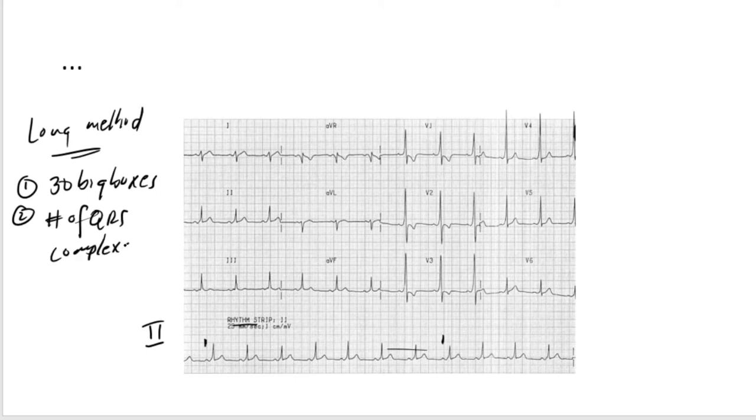Then the second thing that you want to do is count the number of QRS complexes in those 30 boxes. So between here and here, how many QRS complexes do we have? We have one, we have two, we have three, we have four, we have five, we have six, we have seven. Then that number you multiply it by 10, and then you get 70 beats per minute.